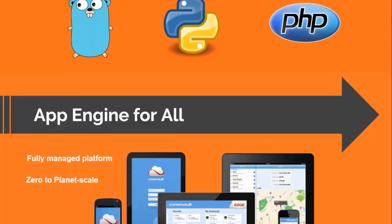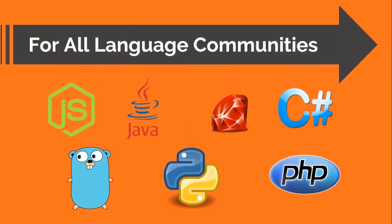It also has support for all language communities. Out of the box, App Engine supports Node.js, Java, Ruby, C-Sharp, Go, Python, and PHP, where developers from these language communities can be productive immediately in a familiar environment.